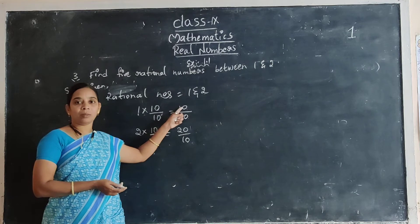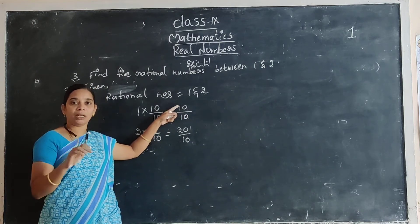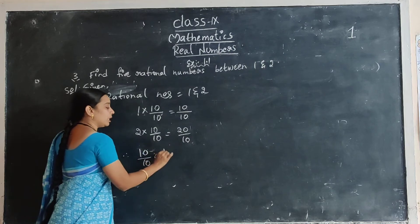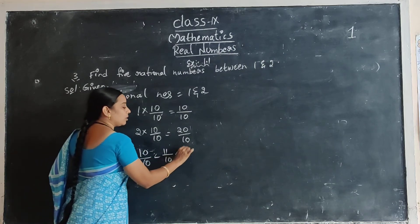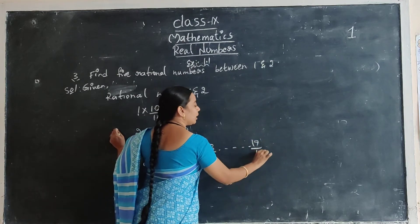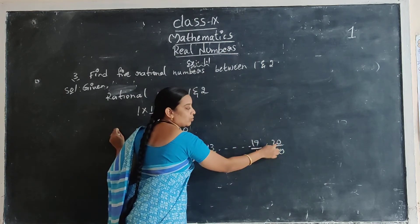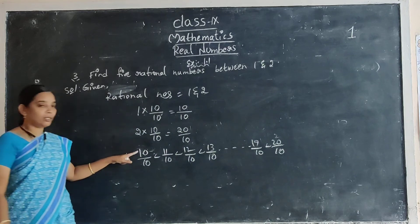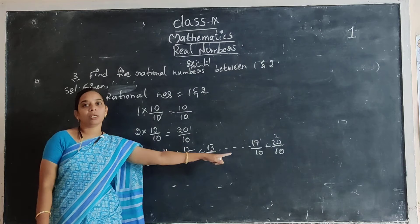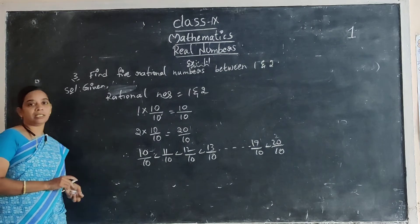You know the numerator values. 10 by 10, after 11 by 10, next 12 by 10, 13 by 10. Write all the rational numbers: 10 by 10, next 11 by 10, next 12 by 10, next 13 by 10, and so on to 19 by 10, next 20 by 10. 20 by 10 — these two are cancelled, 2 times. These two are also cancelled, 1 time — giving 1 and 2. So many rationals you got. In those rationals take any 5 of them. This is easy method.